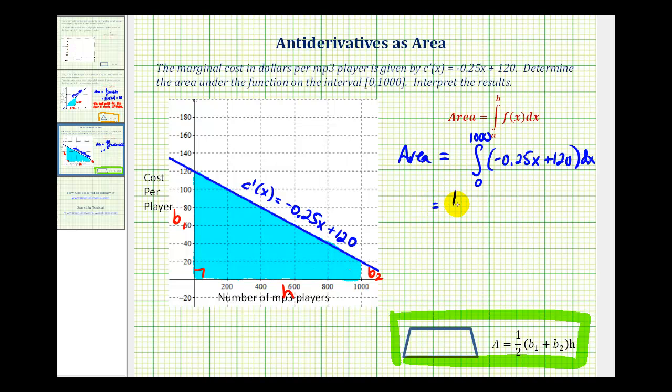So we'll have one-half times base one plus base two. Well base one is 120 plus base two would be 20 times the height, which would be 1,000.